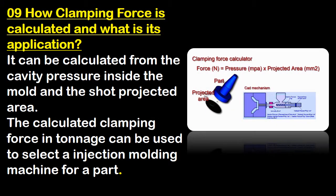How is clamping force calculated and what is its application? It can be calculated from the cavity pressure inside the mold and the shot projected area. The calculated clamping force in tonnage can be used to select an injection molding machine for a part.